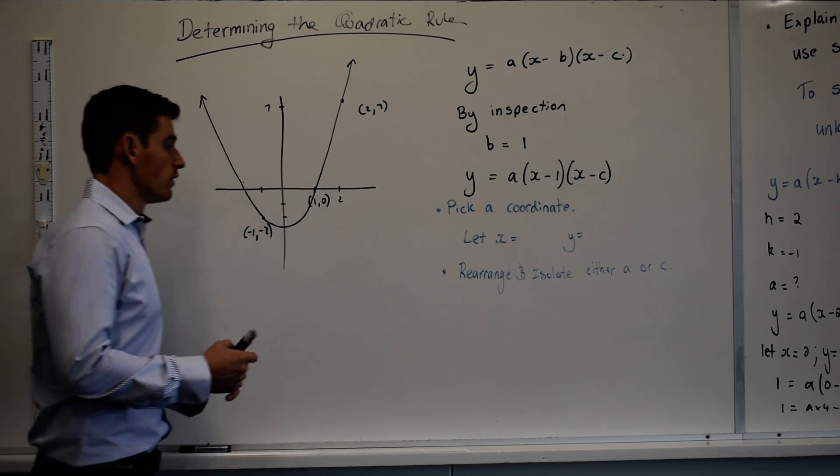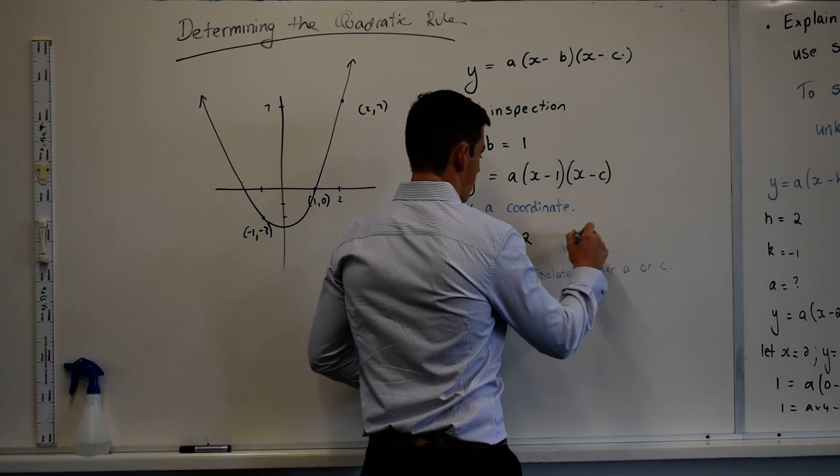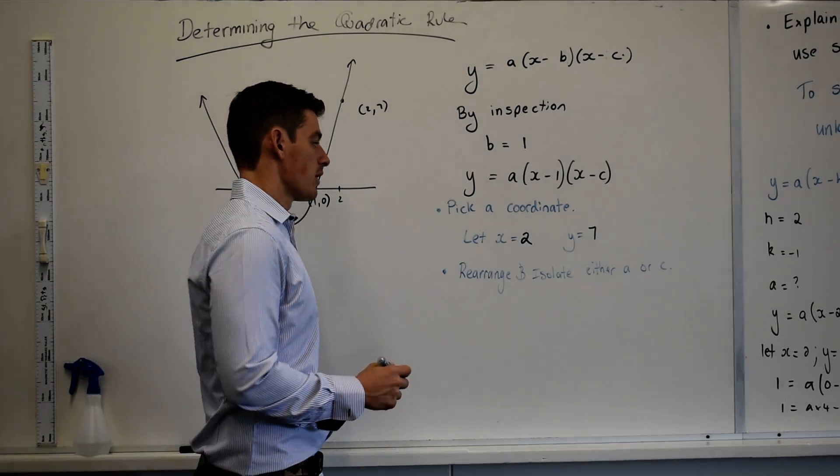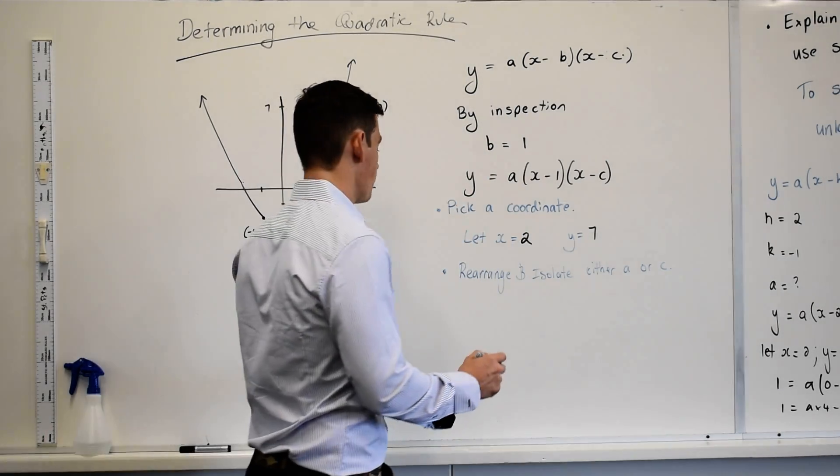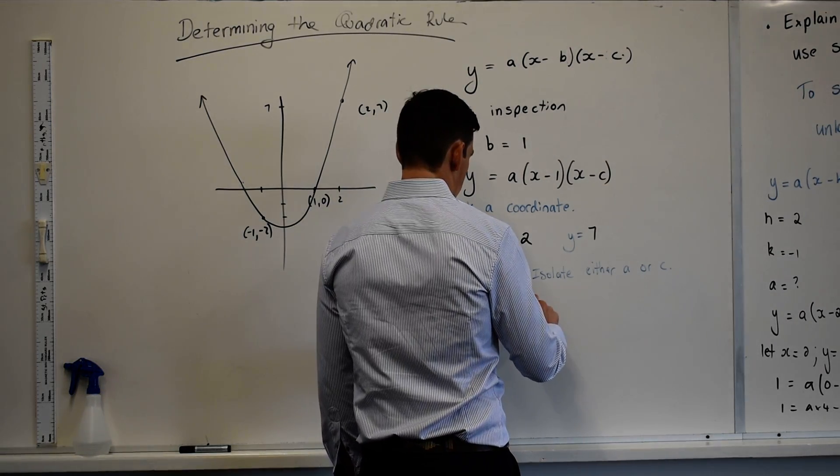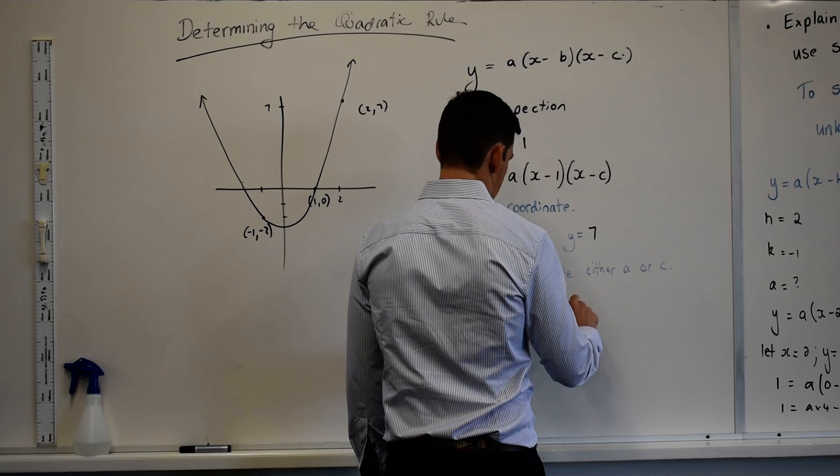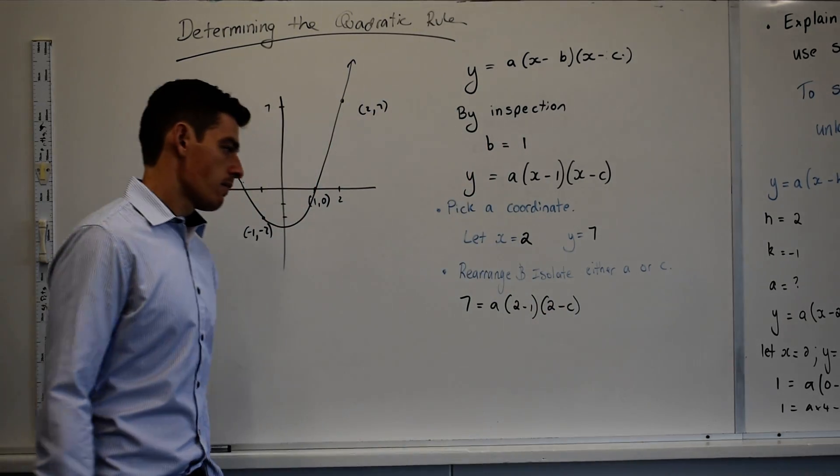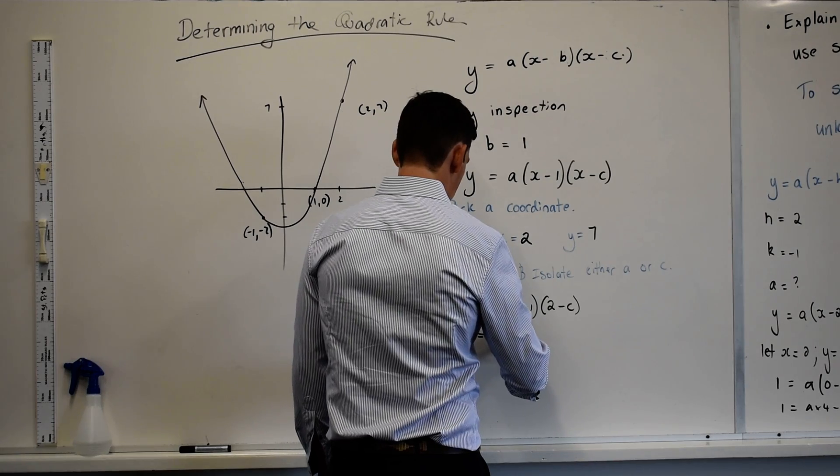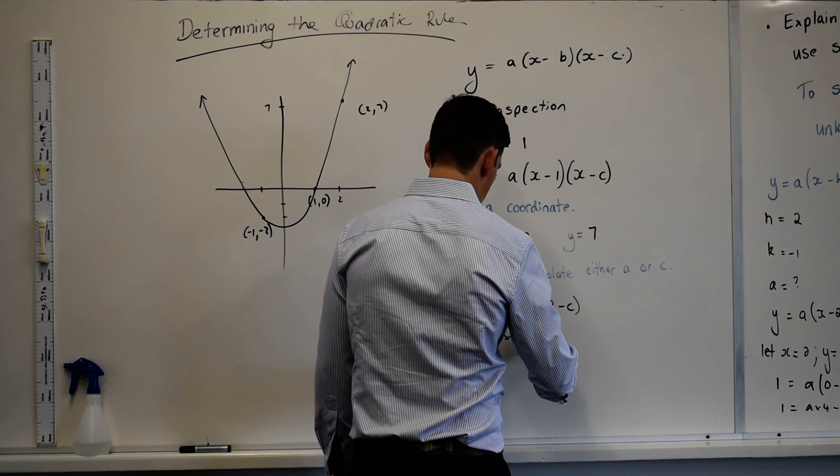Let X equal 2. Let Y equal 7. Anywhere I see X in my equation, I replace it with 2. Anywhere I see Y, I replace it with 7. So 7 equals A, 2 minus 1, 2 minus C. 7 equals A times 1 times 2 minus C.